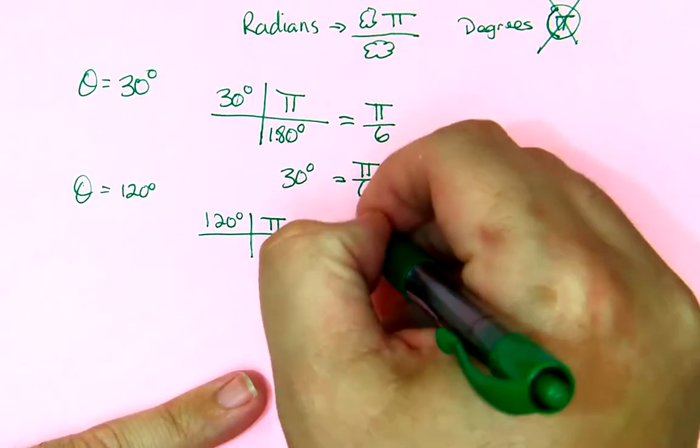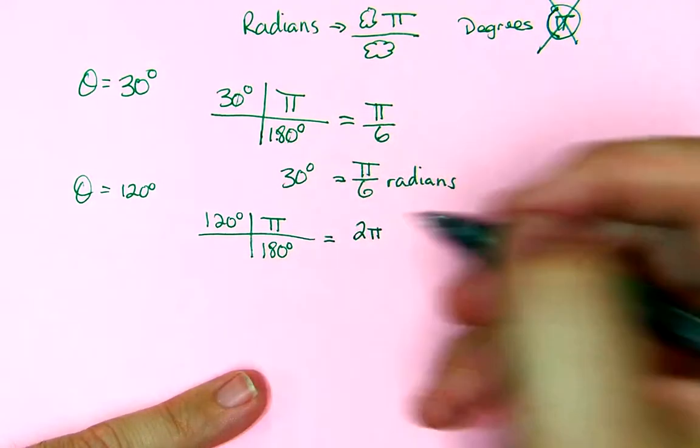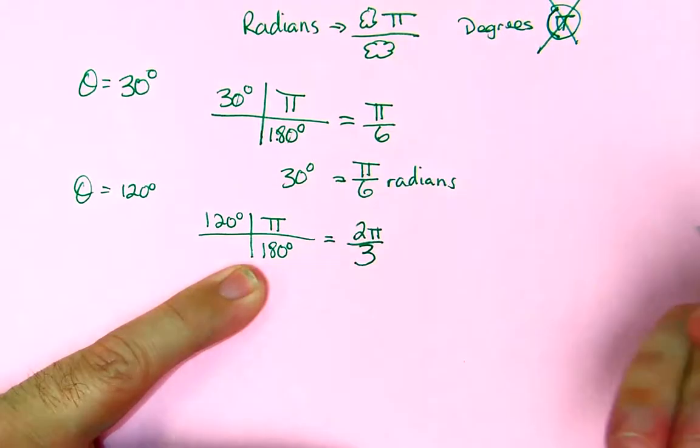Now, in here, I know the zeros divide out, so I just look at the 12 and the 18, and I see that 6 goes into both of those. And, in this case, you get 2π, because 6 goes into 12 two times. 6 goes into 18 three times. So, you get 2π over 3.